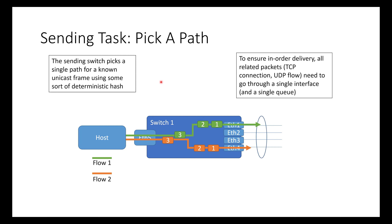For unicast, the sending switch picks a single path for a known unicast frame using a deterministic hash, done to ensure in-order delivery. Any related frames — same TCP connection or UDP flow — need to go through a single interface, a single queue and buffer. It's like being in line at the grocery store or airport security: if you're in a group and split across lines, the order you enter may not be the order you exit. So to ensure in-order delivery, everyone stays single file.